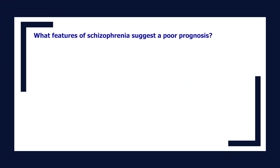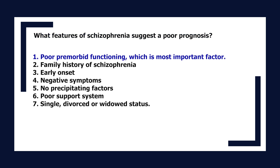What features of schizophrenia suggest a poor prognosis? Poor premorbid functioning is the most important factor. Other factors include family history of schizophrenia, early onset, negative symptoms, no precipitating factors, poor support system, and single, divorced, or widowed status.